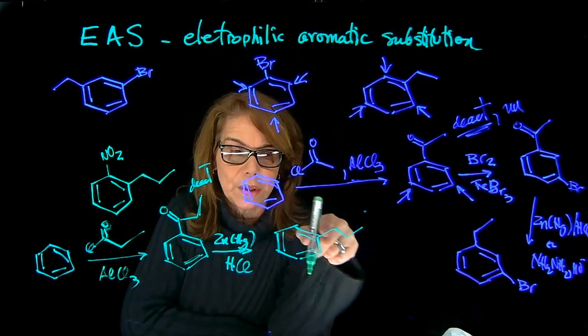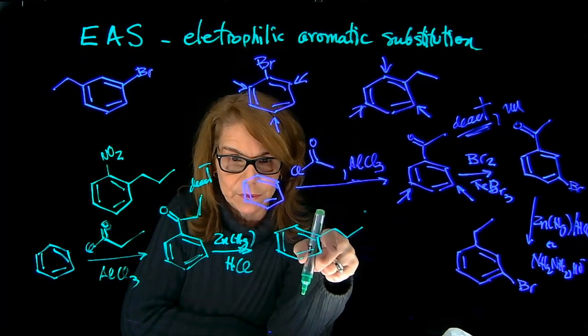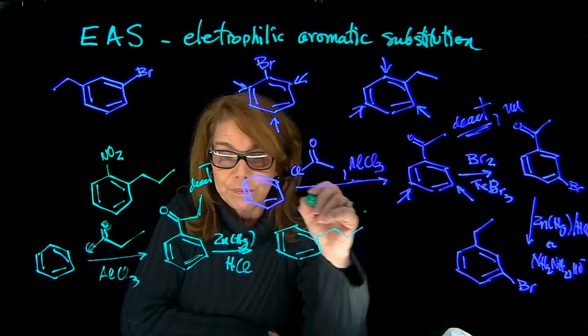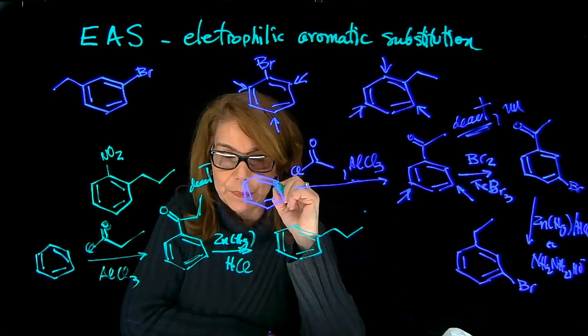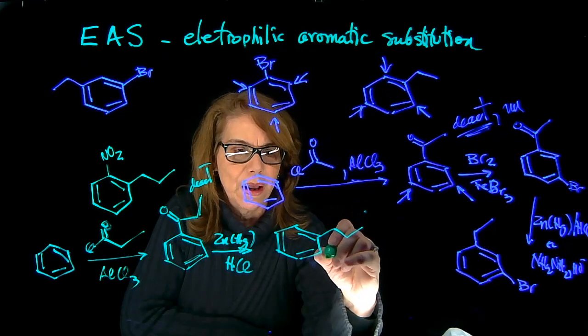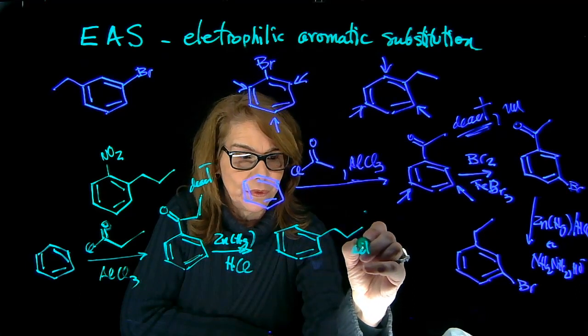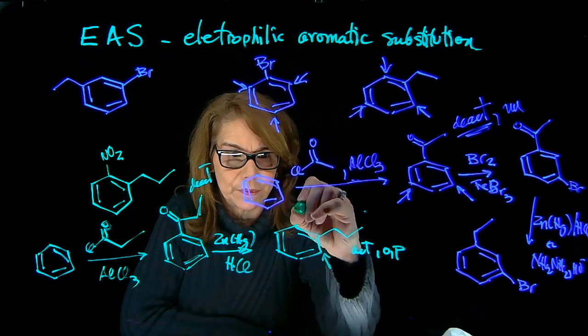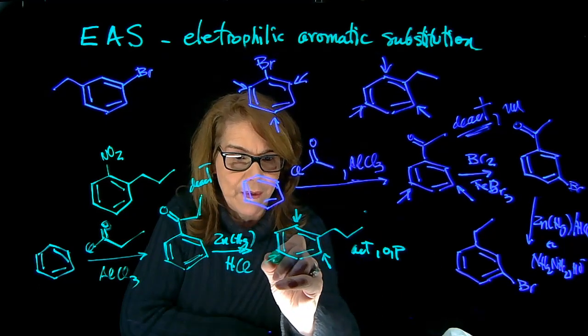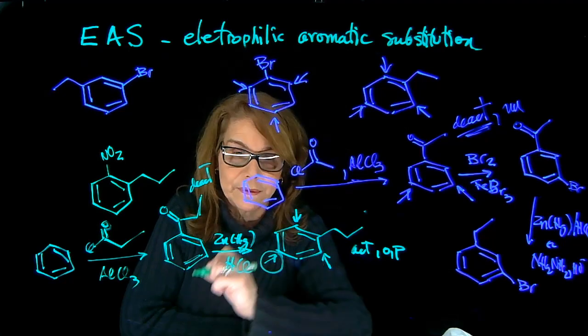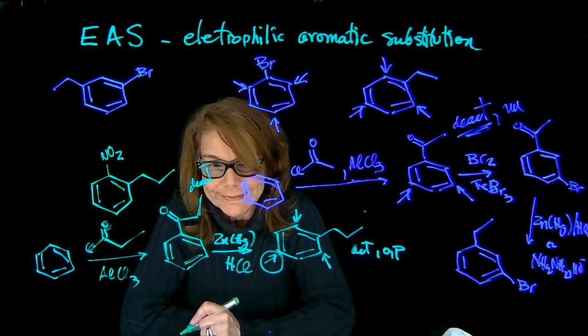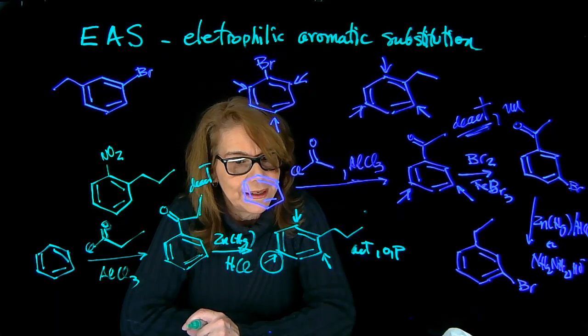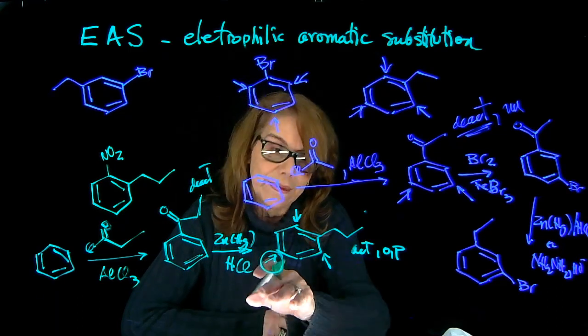If I do the nitration from propyl benzene, the most likely major product is going to be para. That's a large group, activating ortho-para directing. So here are the positions for the nitration, but the major is going to be here, not what I want. So what we can do instead is use a protective group in that position.